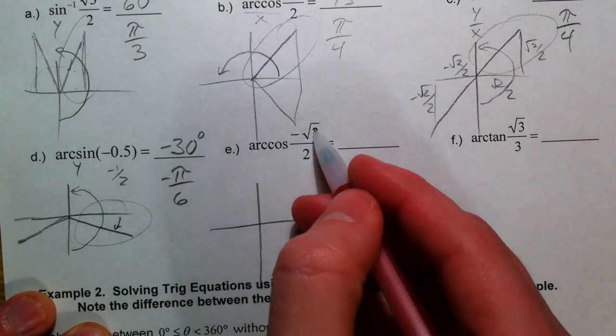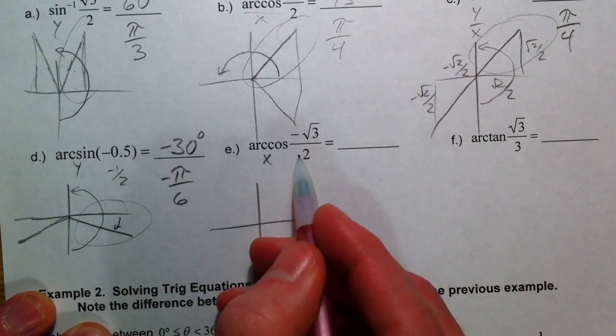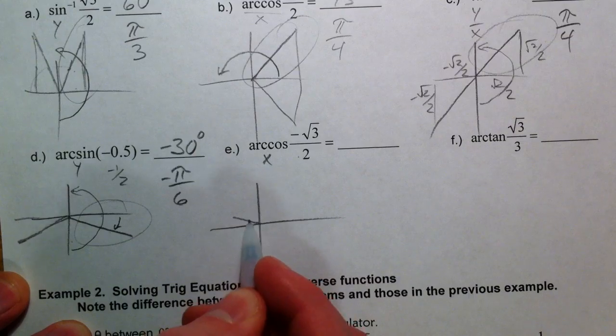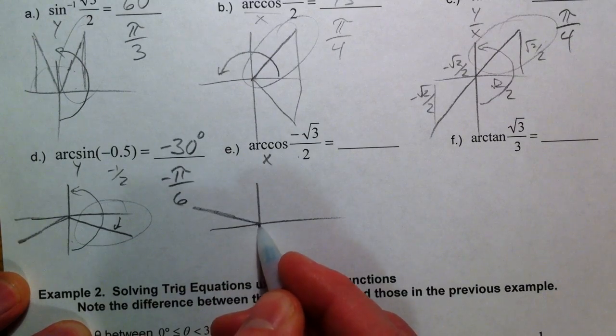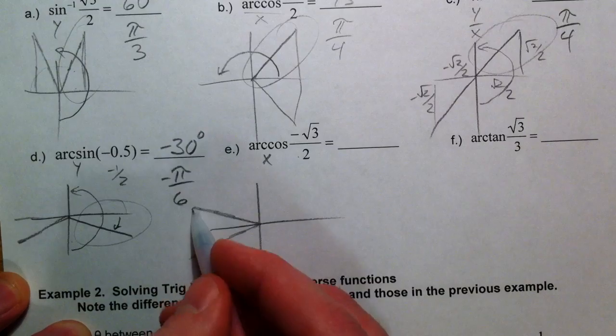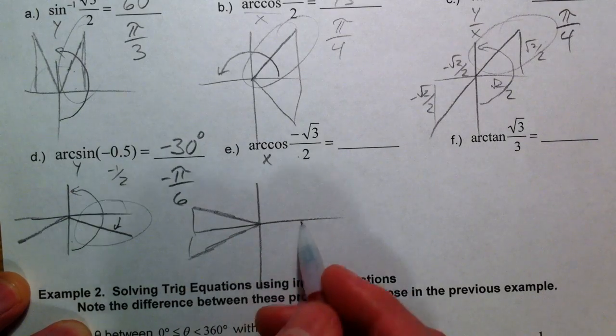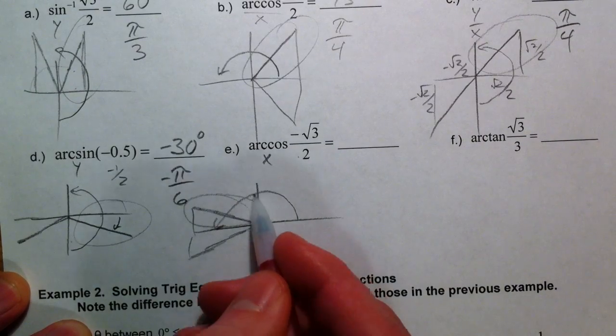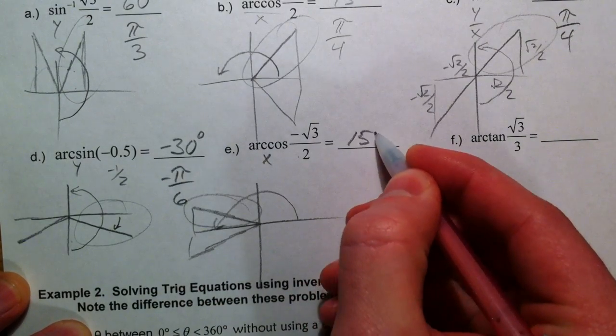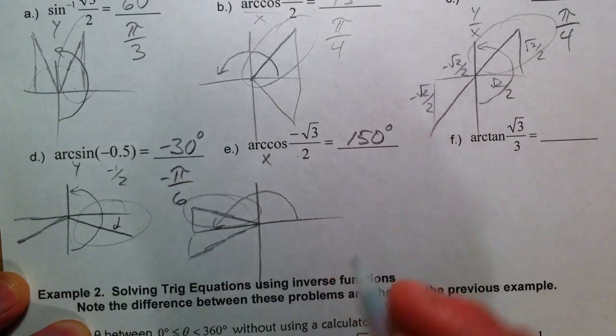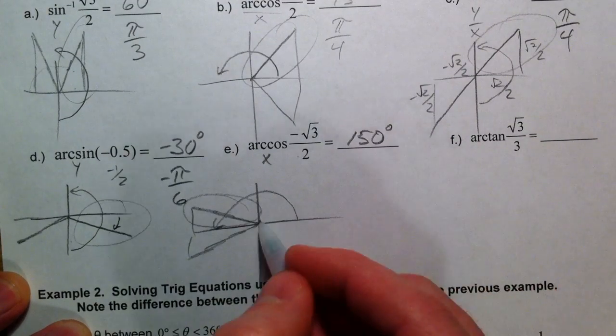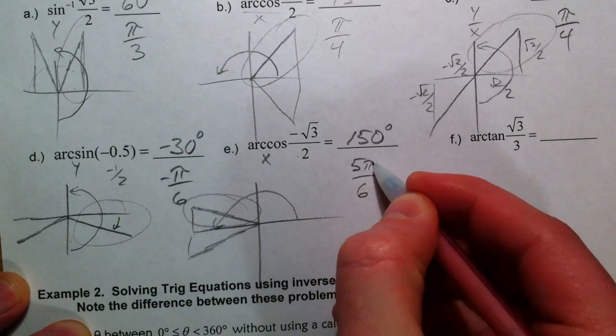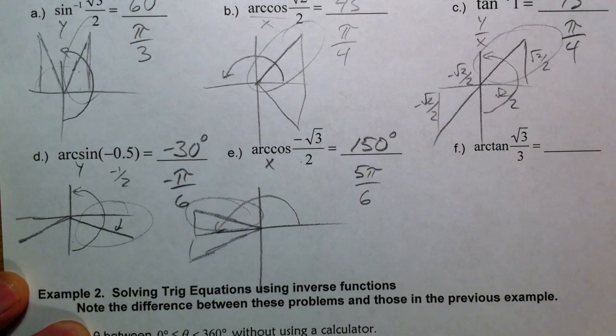Arc cosine - when is the x value negative root three over two? So when is the x value the big side of the 30, 60, 90? Over here, and over here because the x has gone to the left. I'm only interested from zero to 180, so I'm going to use this one. So this would be 150 degrees, and also that would be five pi over six, because it's almost to 180.